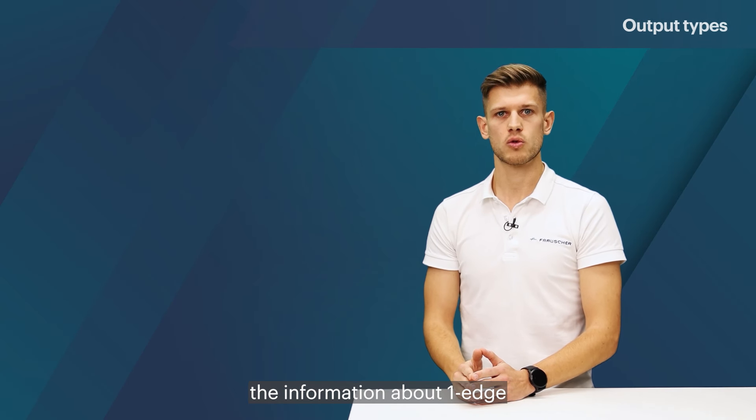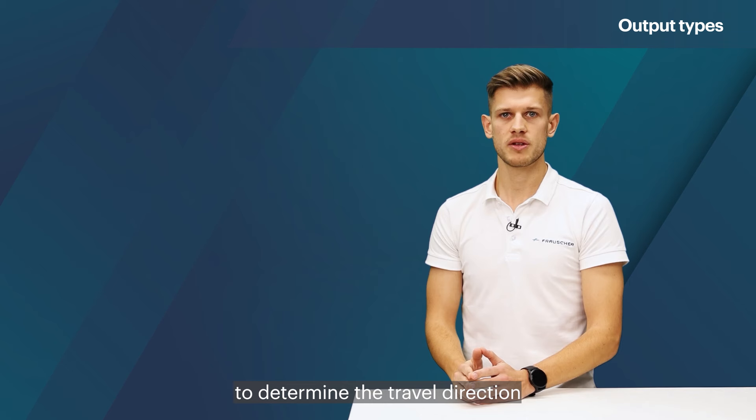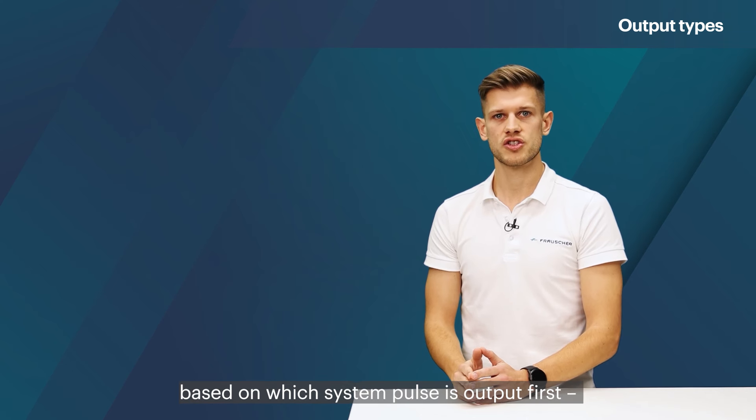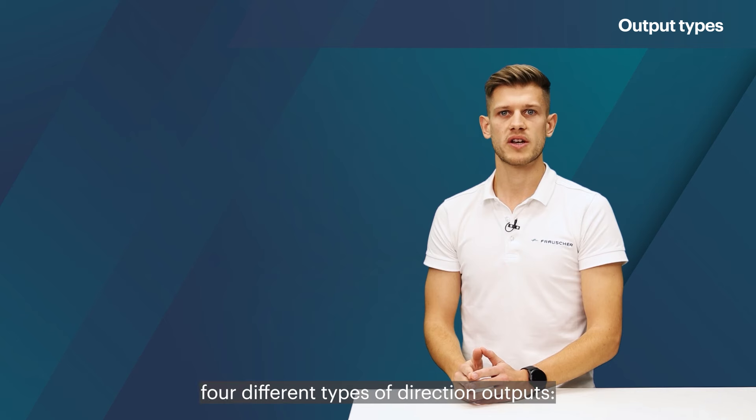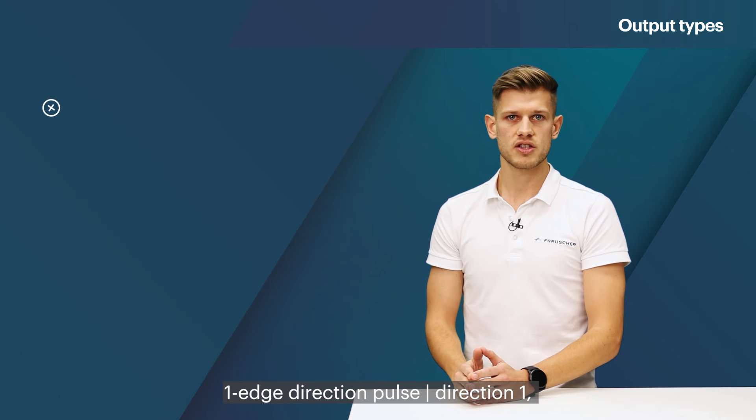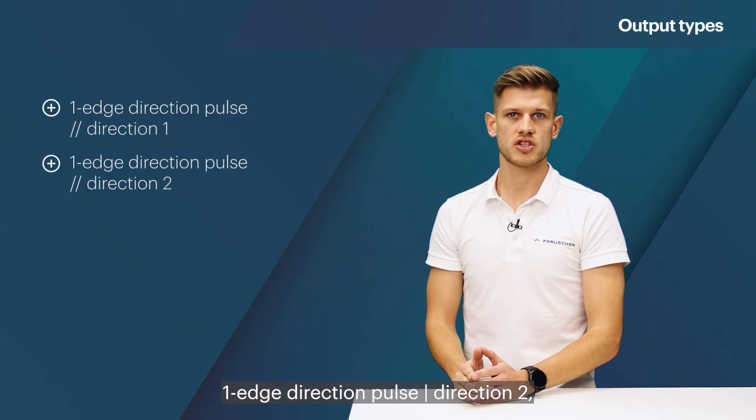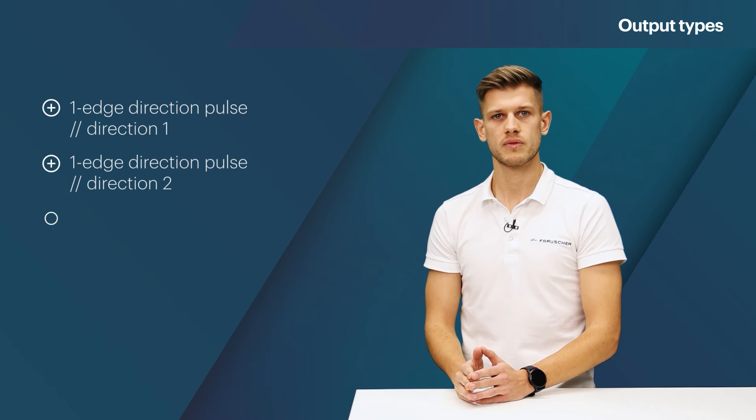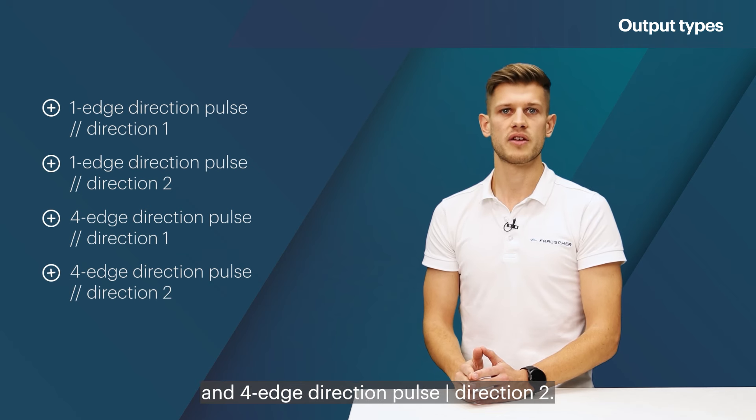Combining the information about one edge and four edge pulses with the ability to determine the travel direction based on which system pulse is output first, makes it possible to provide four different types of direction outputs: one edge direction pulse direction 1, one edge direction pulse direction 2, four edge direction pulse direction 1, and four edge direction pulse direction 2.